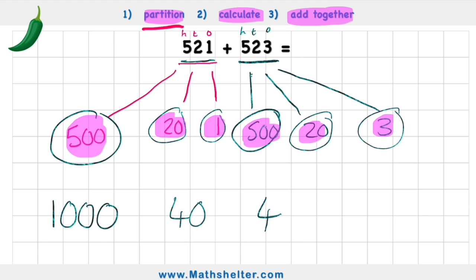And I can see all of that in my mind's eye. And my last tip was to add it all back together to get my final answer. So if I add 1,000 to 40 and to 4, I end up with 1,044. And I can do all of that in my head just simply by partitioning it, calculating it in my mind, and then adding it back together.